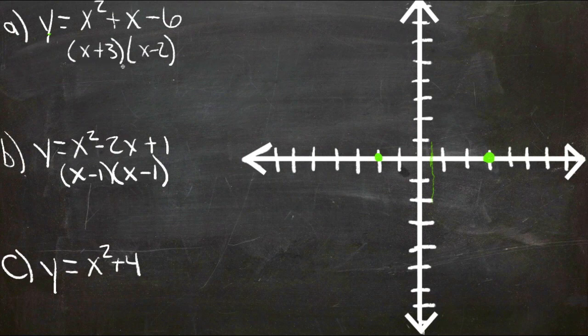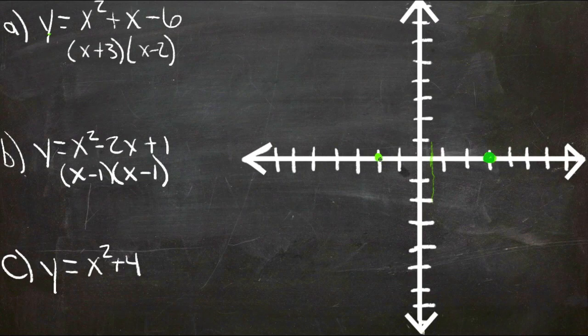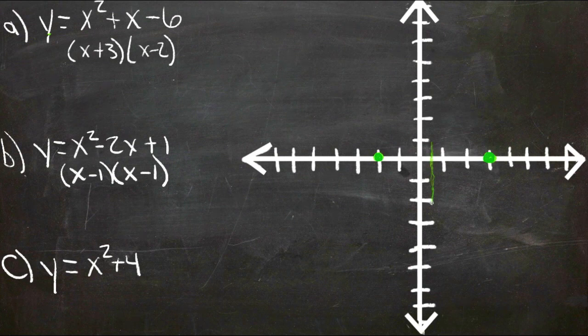Our first one has two x-intercepts. One at x equals positive 3, you can see it marked here in green. And one at x equals negative 2, also here in green. That gives us a line of symmetry right here at x equals 1 half.